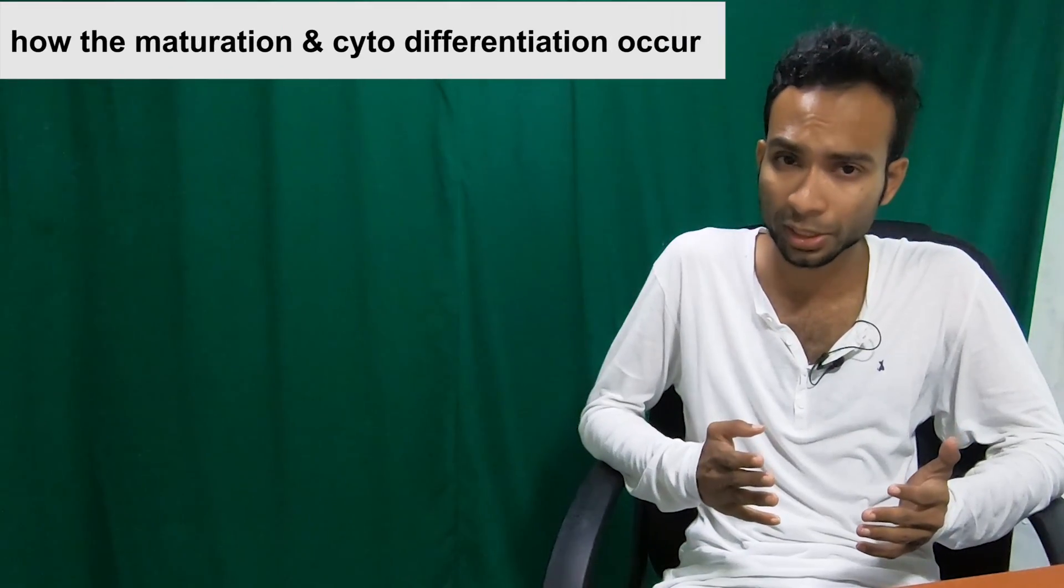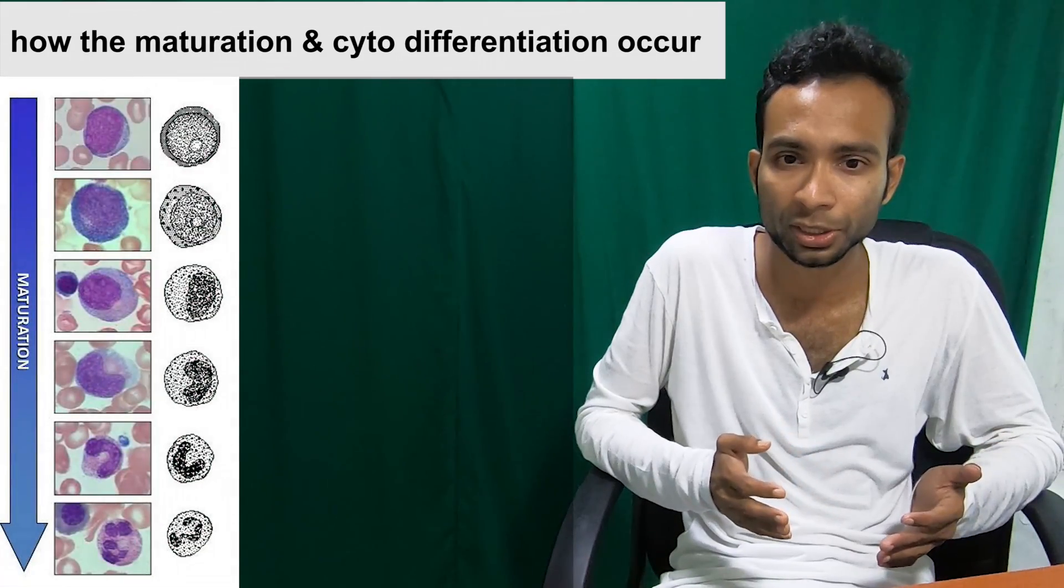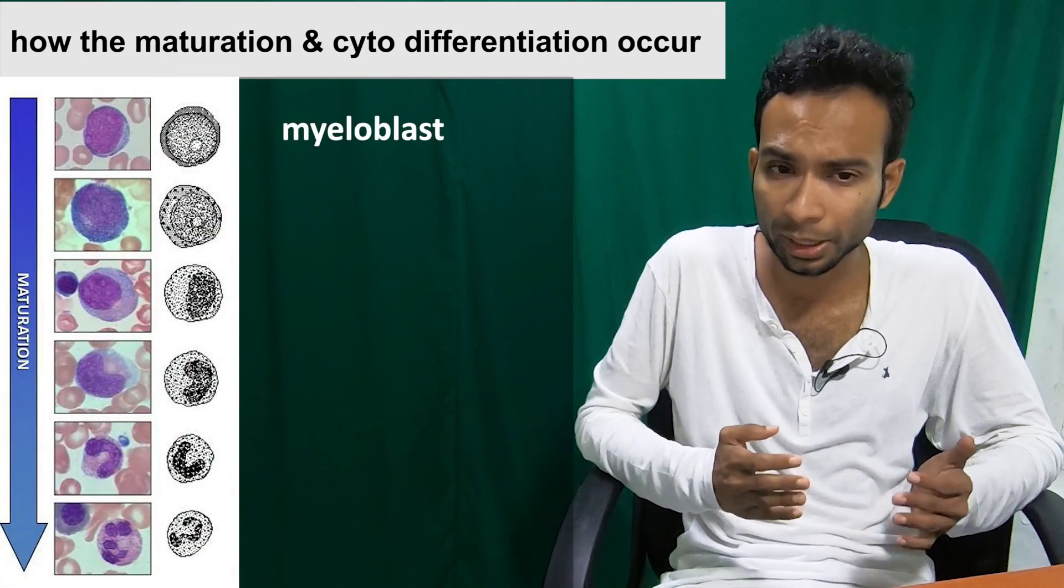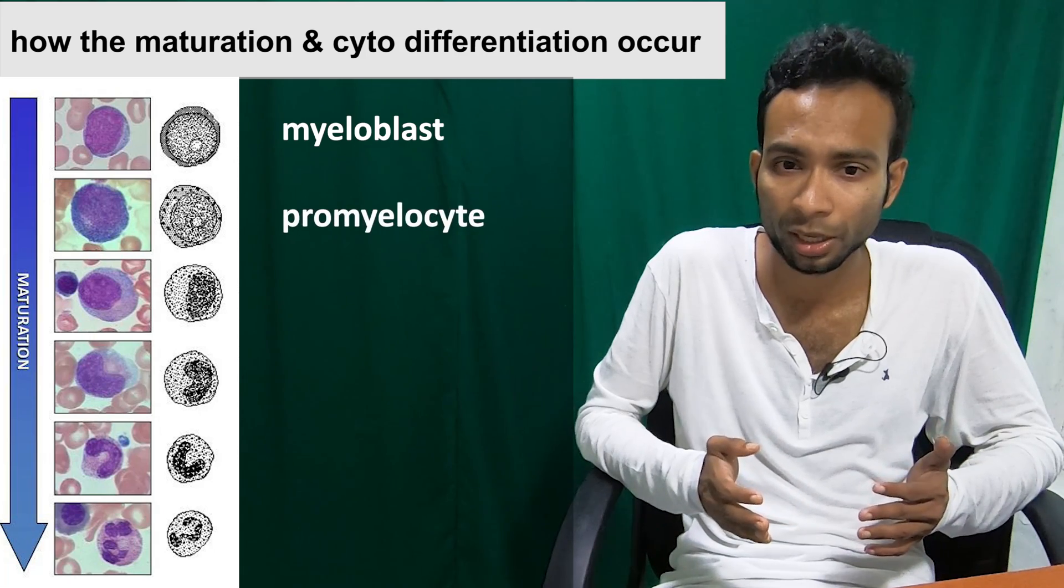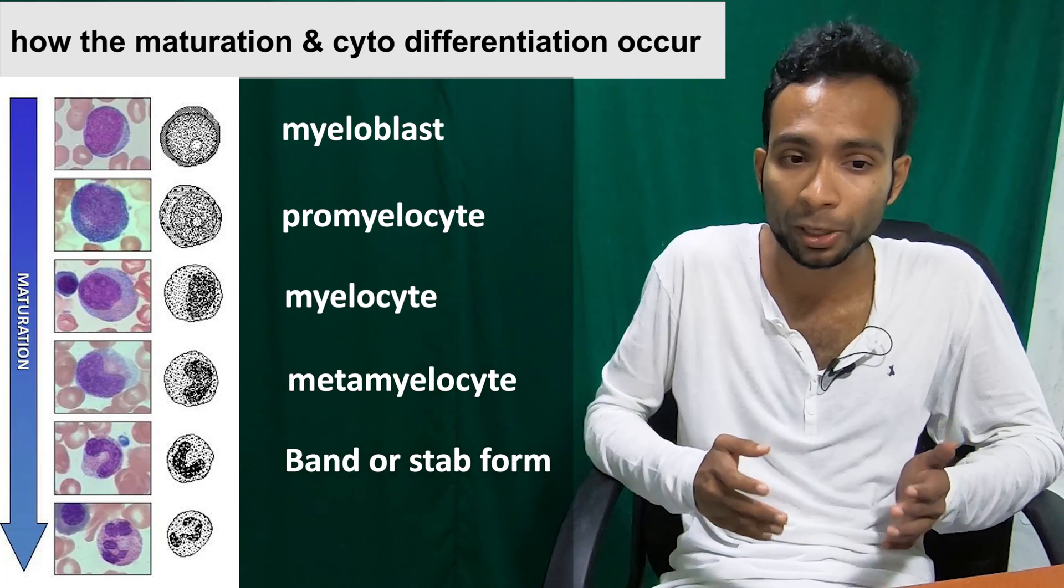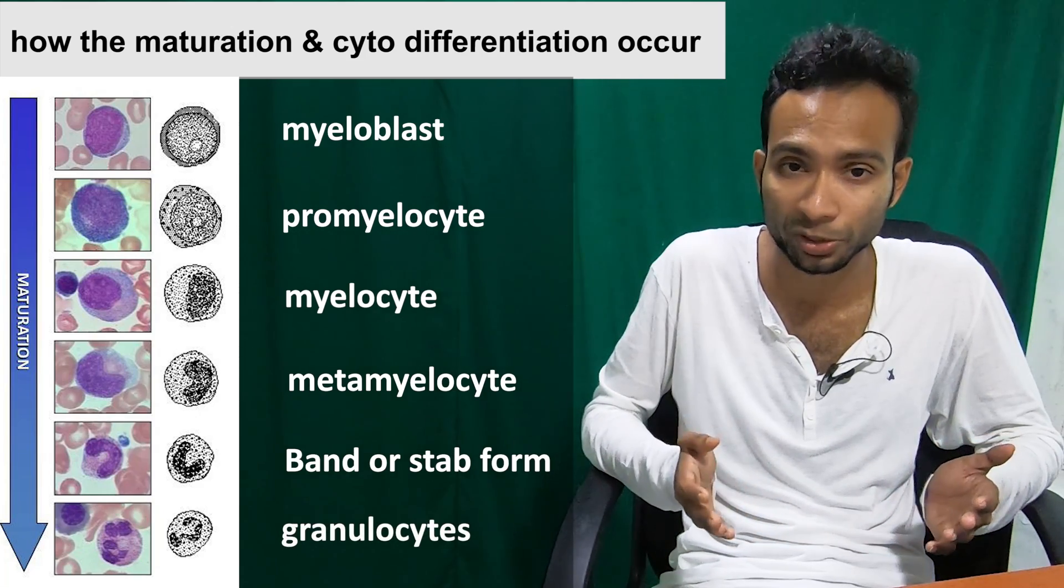Let's see how the maturation and cytodifferentiation occurs. First, primitive multipotential stem cells give rise to myeloblast, then it becomes promyelocyte, myelocyte, metamyelocyte, band or stab form, and finally mature into granulocytes such as neutrophil, eosinophil, or basophil.